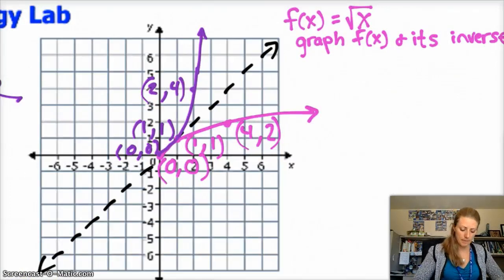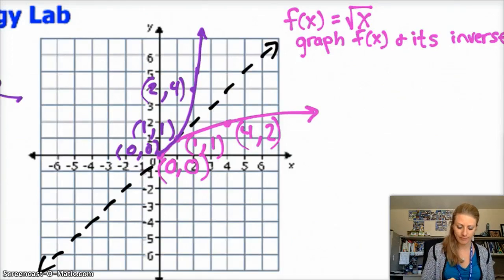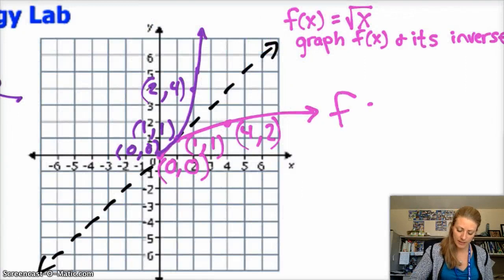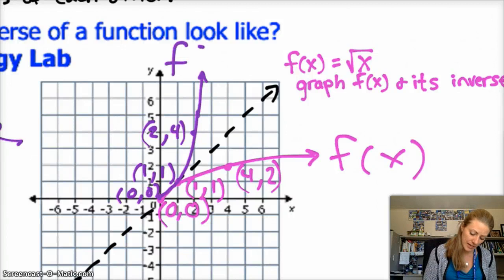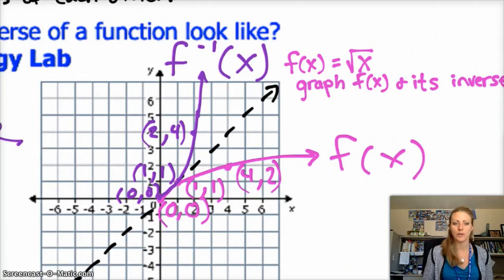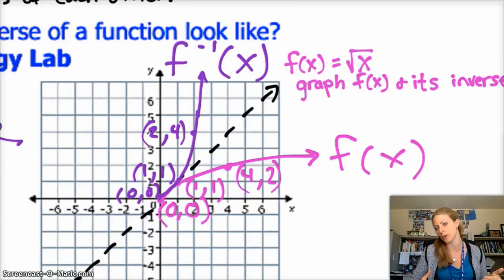So the pink is the original function f of x, and then the purple is the inverse. There's notation that's important: if the inverse is a function and the original is a function, then if f of x is my original function, the inverse is denoted as f to the negative 1 of x. It looks like an exponent, but it's not raising the function to the power negative 1 — it's just notation meaning f inverse.